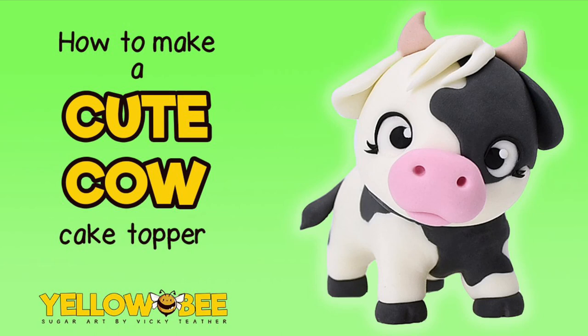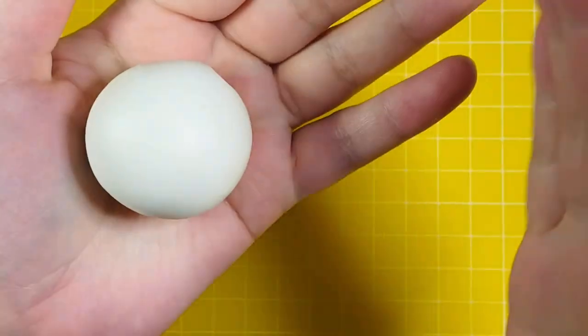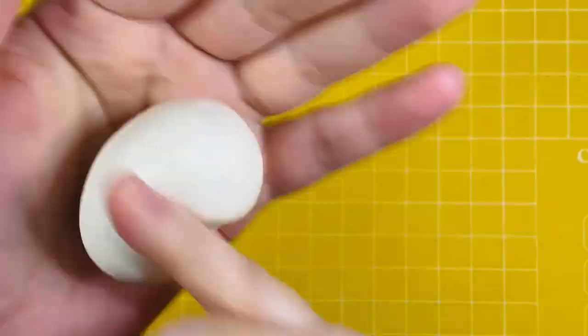Hello, welcome to my channel. Today I'm going to show you how to create this cute cow cake topper. I'm using Saracino modeling paste and Magic Colors gel colors. The body is 35 grams of white modeling paste, which I've rolled into a really short sausage shape.